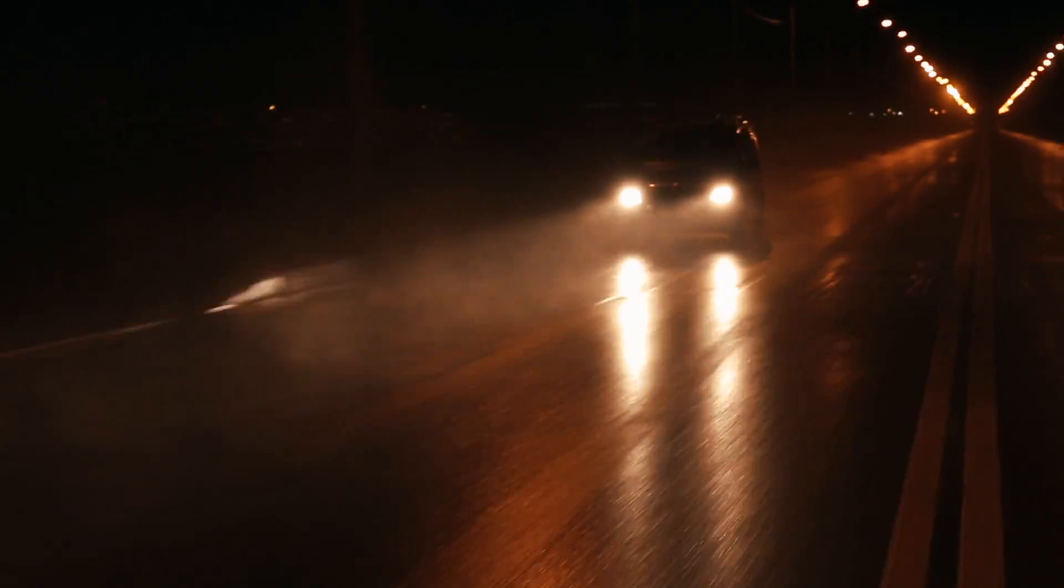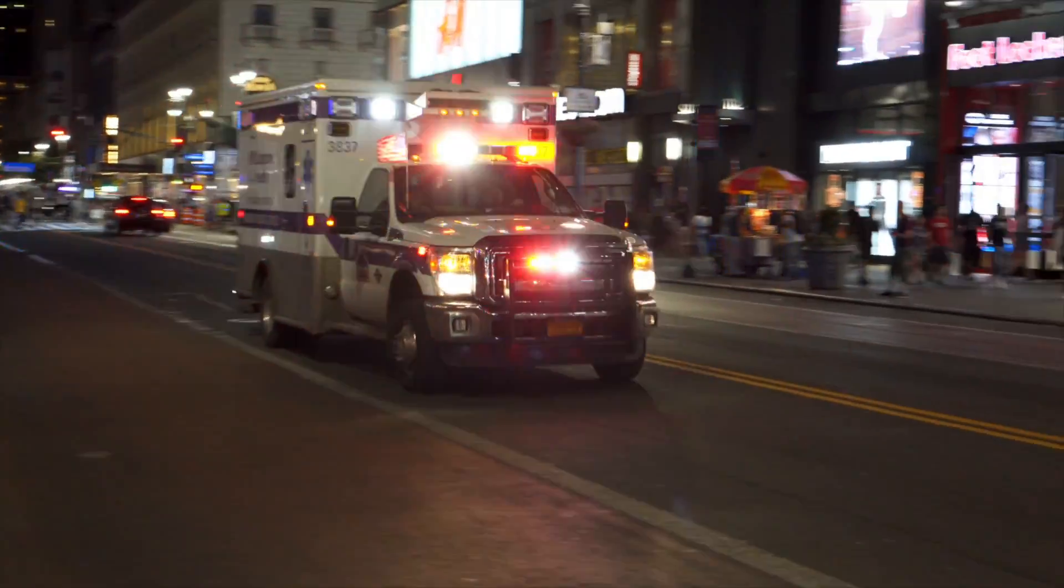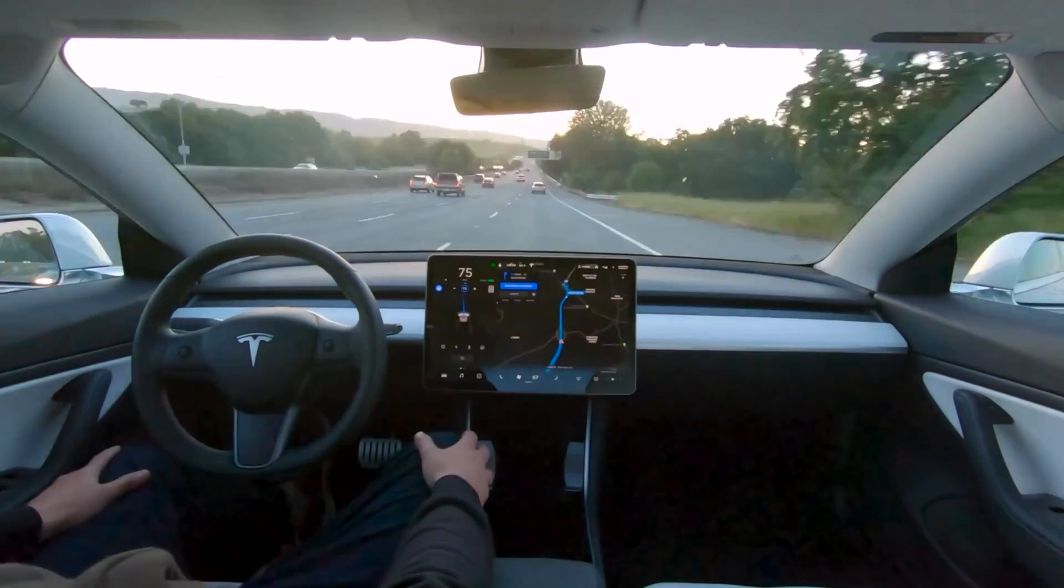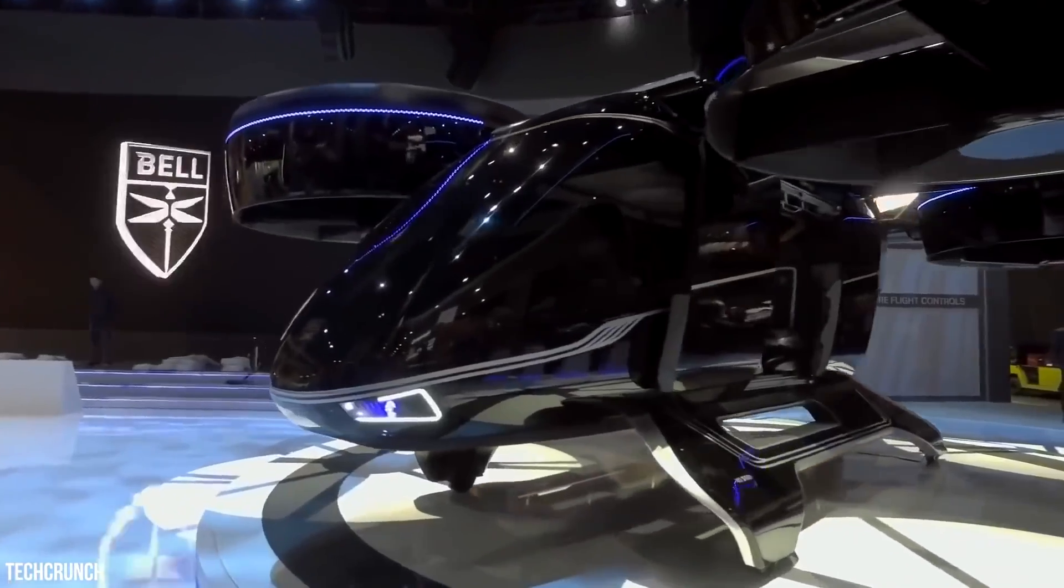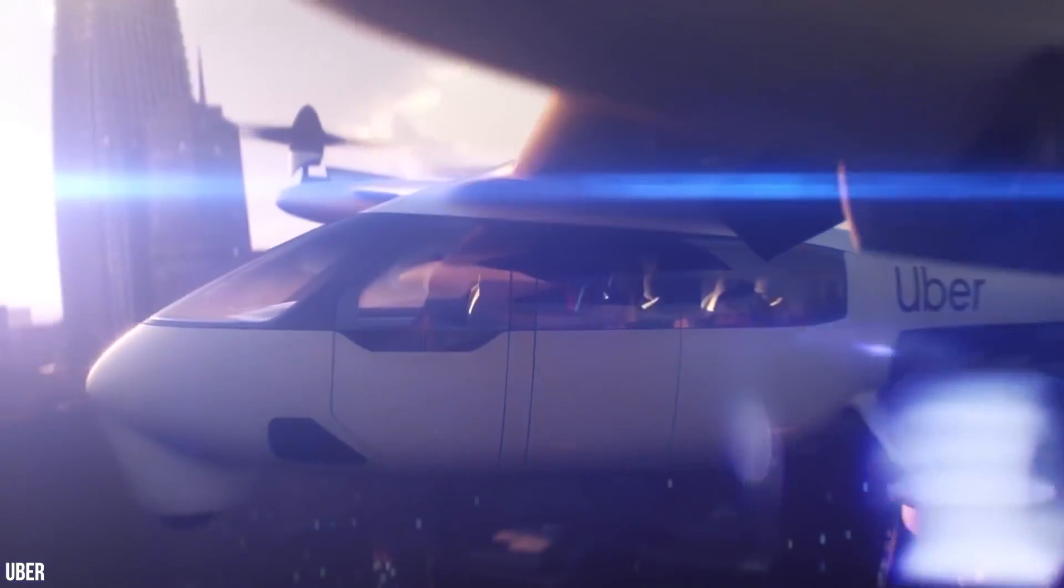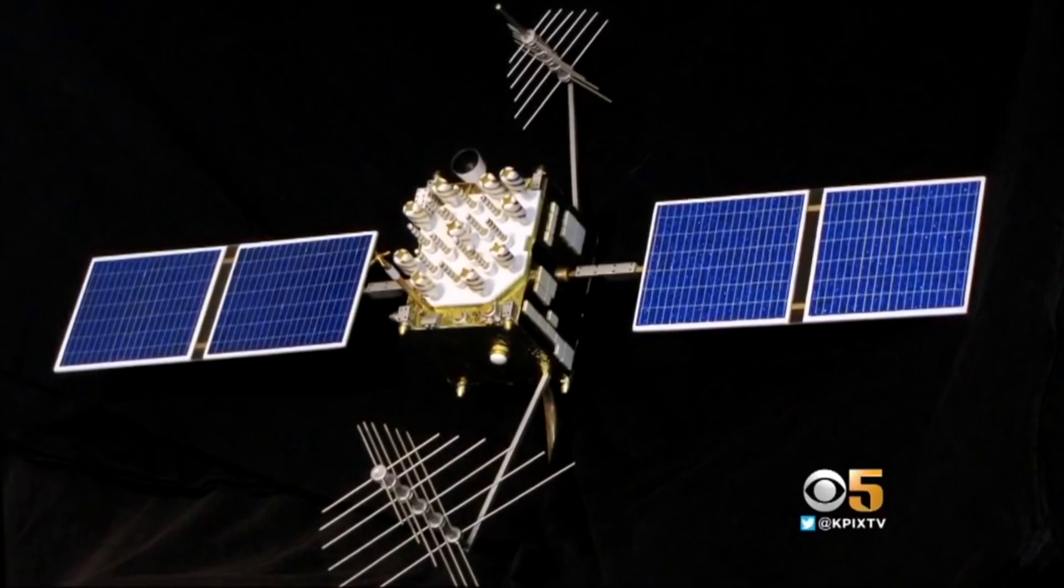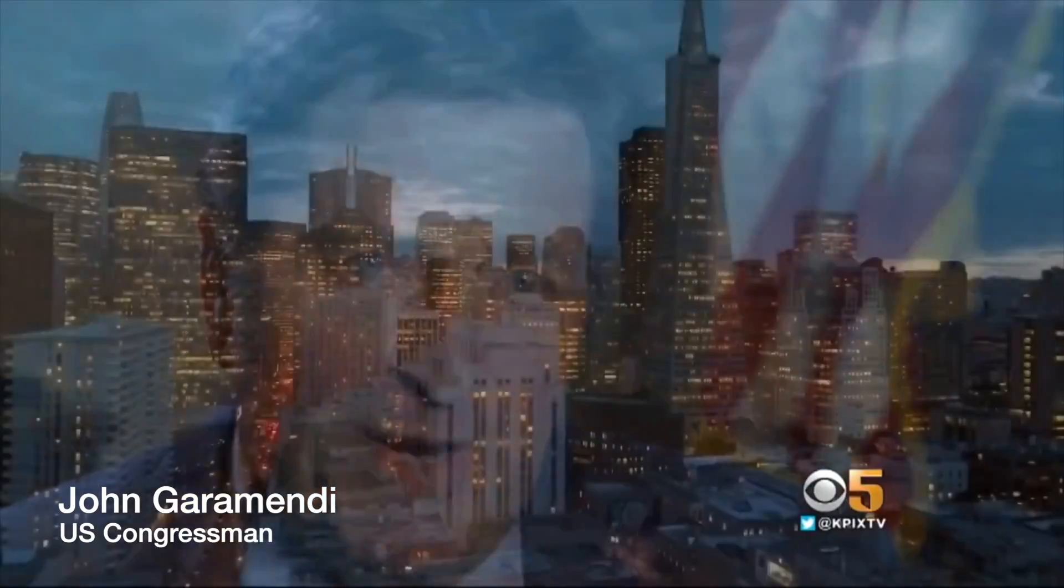If a satellite navigation network failed, it would disrupt trains, telecoms, and emergency services. And as autonomous cars and air taxis arrive, SatNav failure could be disastrous. If GPS were to fail in the San Francisco Bay Area tonight, all the bridges would shut down because none of the payment systems would work.